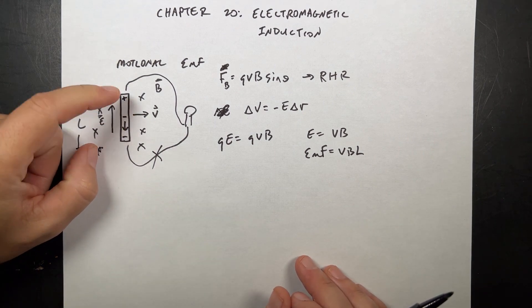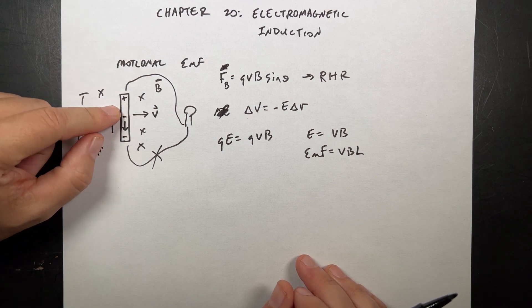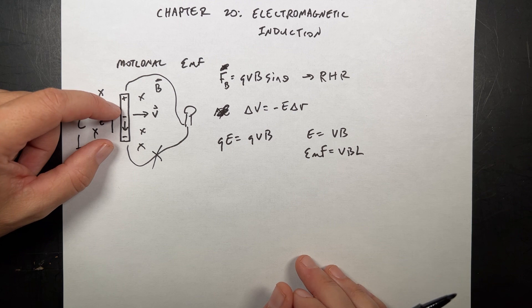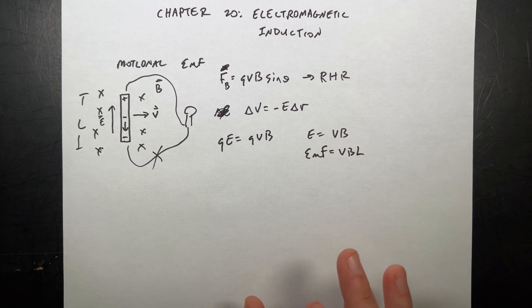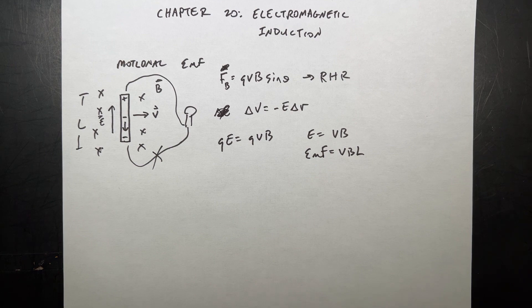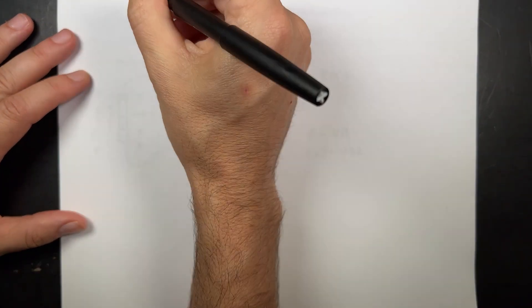But that's motional EMF. It's a lot like the Hall effect from the previous chapter, detecting magnetic fields. They give a thing about the EMF due to a rotating generator, but I don't want to talk about that. Because it's just an equation and they don't really even explain it. I do want to talk about this most important thing.